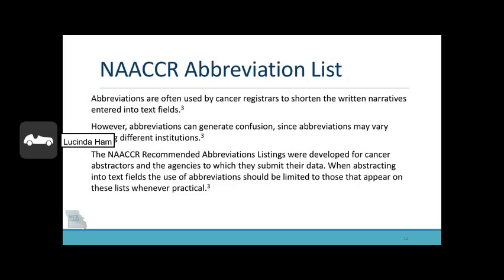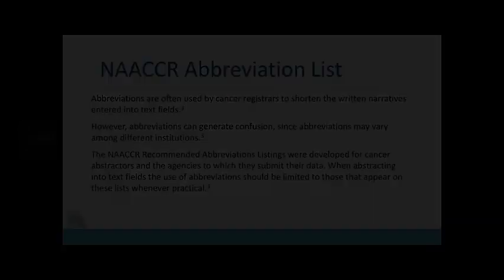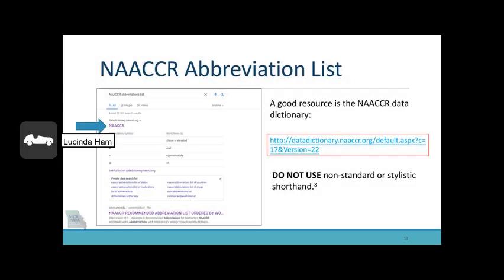NACER abbreviation list. Abbreviations are often used by cancer registrars to shorten the written narratives entered into text fields. However, abbreviations can generate confusion since they may vary among different institutions. The NACER recommended abbreviations listings were developed for cancer abstractors and the agencies to which they submit their data. When abstracting into text fields, the use of abbreviations should be limited to those that appear on these lists whenever practical. A good resource is the NACER Data Dictionary at datadictionary.nacer.org. Do not use non-standard or stylistic shorthand.